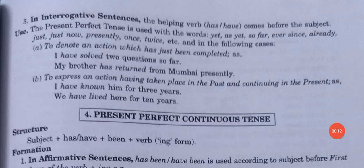In interrogative sentences, has or have comes before the subject. The present perfect tense is used with words like yet, as yet, so far, ever, since, already, just, just now, presently, only, twice. Uses: (1) To denote an action just completed — 'I have solved two questions so far'; 'My brother has returned from Mumbai presently.' (2) To express an action in the past continuing in the present — 'I have known him for three years'; 'We have lived here for 10 years.'